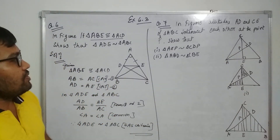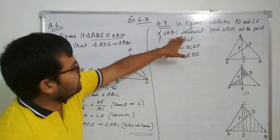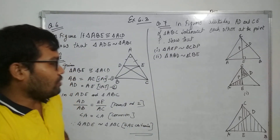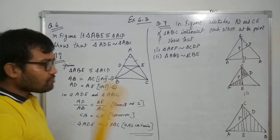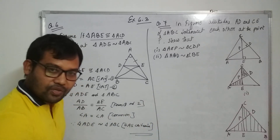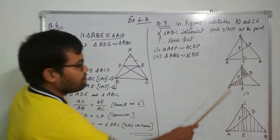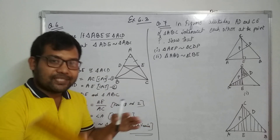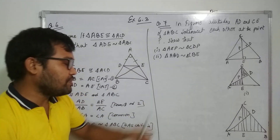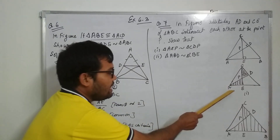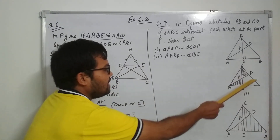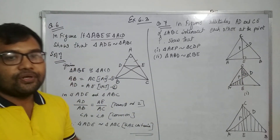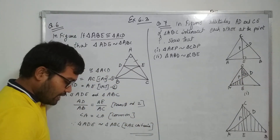There is a point P. For question one, if you see the first diagram, we need to prove triangle AEP similar to triangle CDP — this is the first part. Just for your understanding, I have drawn it in a separate diagram. Triangle AEP similar to triangle CDP — we need to show it.